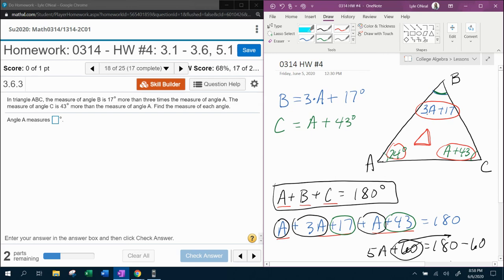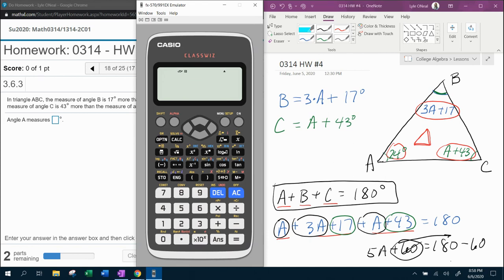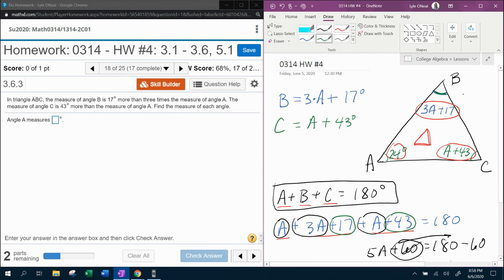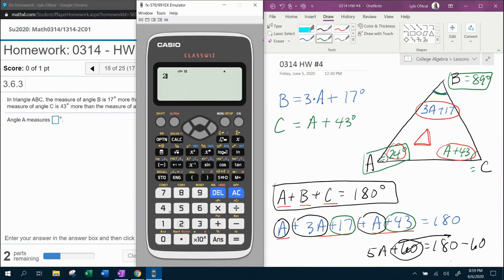Well, I sure can. It's 3 times A plus 17. So what is 3 times A? A is 24 plus 17. That makes B 89. B is 89. A is 24. And look at C. C is A plus 43. So A is 24 plus 43, 67. So that makes C 67 degrees.